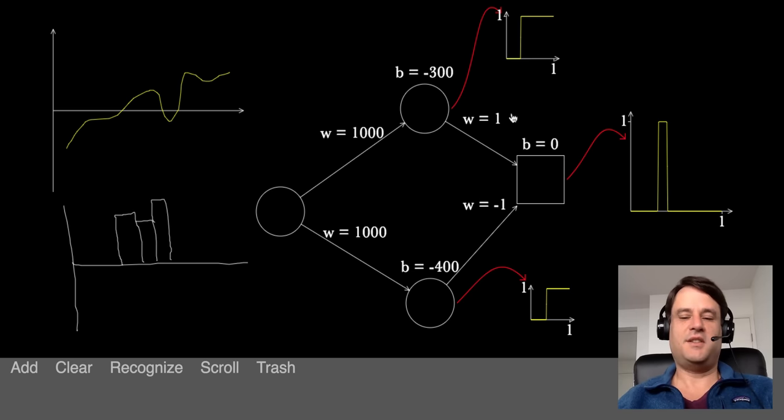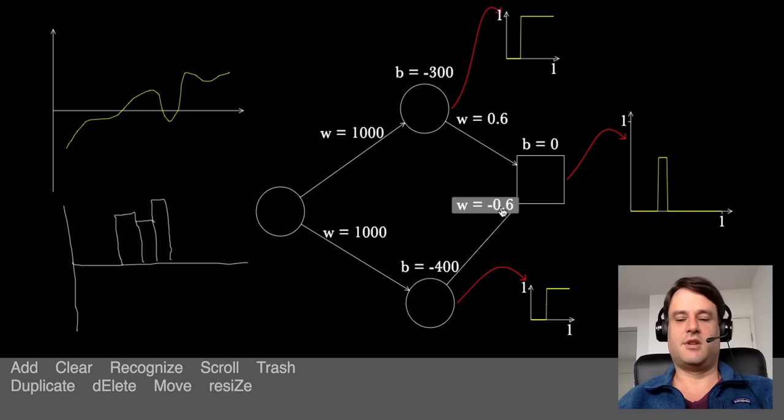We can change the height of the tower by changing the weight. Let's change it to a weight of 0.6 and minus 0.6. So we get a height of 0.6 for the tower function. And if we were to change the biases here, we could also change the width, however we'd like. That's how to construct a single tower function.